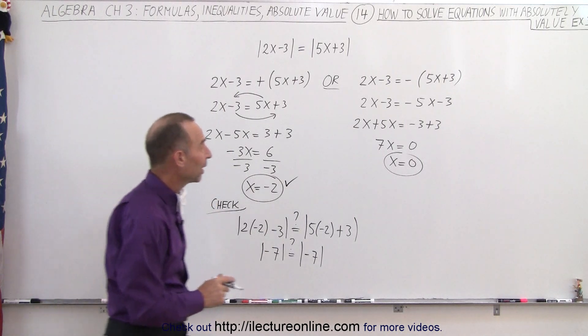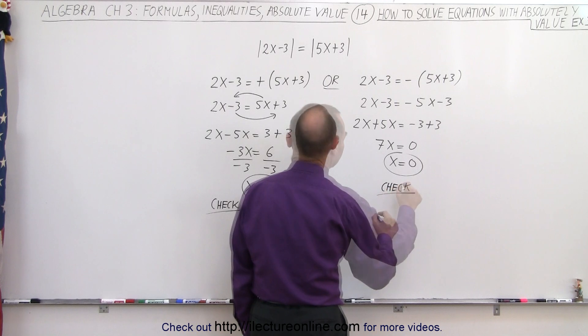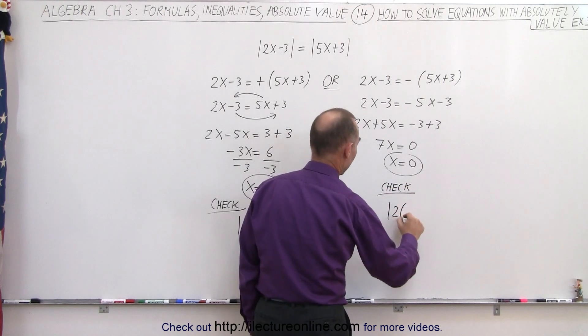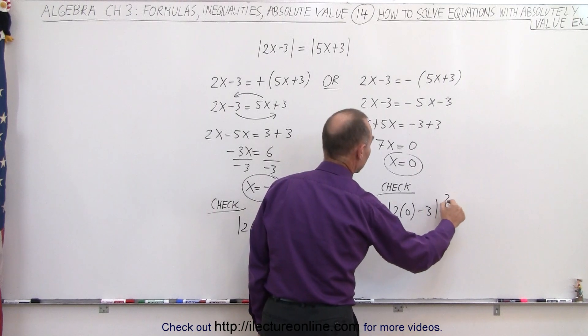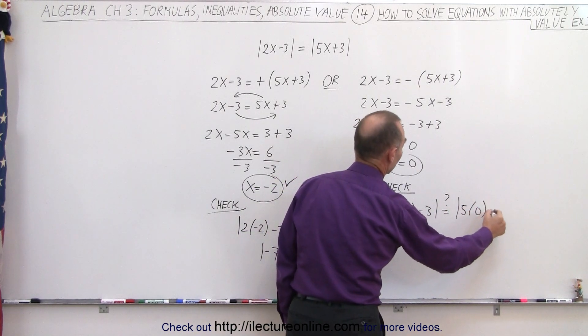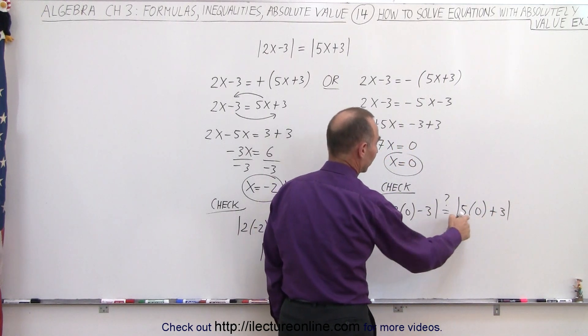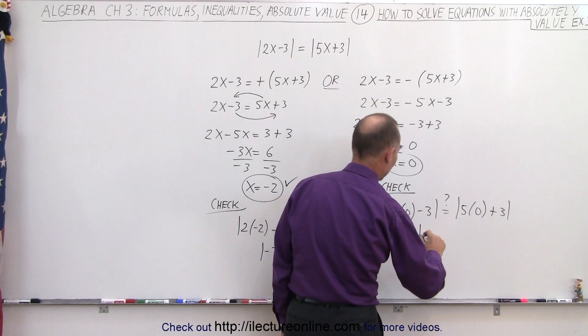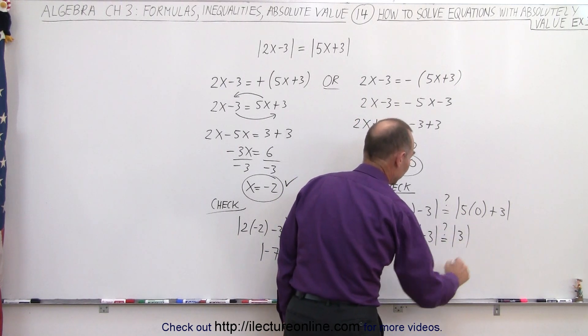Let's do the same with what we have on the right. So we end up with, we're going to check, the absolute value of 2 times 0 minus 3. Is that indeed, question mark, equal to 5 times 0 plus 3? And of course, 2 times 0 is 0, 5 times 0 is 0. So is the absolute value of negative 3 equal to, question mark, the absolute value of positive 3?